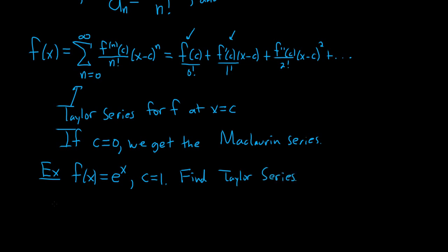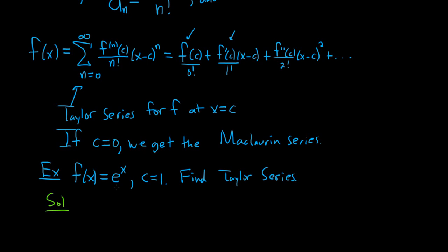Okay, so solution. So basically it's like finding the Taylor polynomial, except you have to go on for forever. So we'll start by finding the derivative. So we have f of x, that's equal to e to the x. And the nice thing is the derivative of e to the x is e to the x. No matter how many times you take the derivative, you're going to get e to the x. So the nth derivative of e to the x is just e to the x.